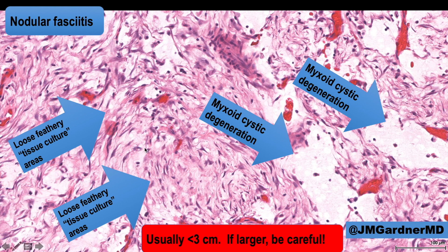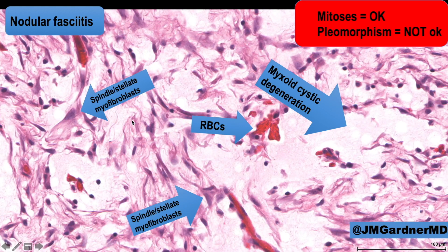Here's another example — this one is a little more pale due to the scan, but the myxoid change is sometimes not always as blue as in the first example. Again, loose feathery myofibroblasts, extravasated erythrocytes which are often present, and spindle, stellate, or triangle-shaped cells.